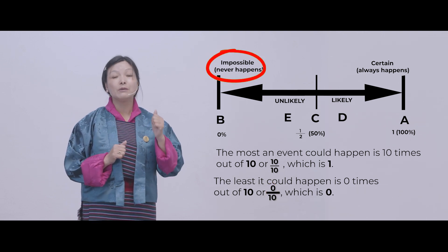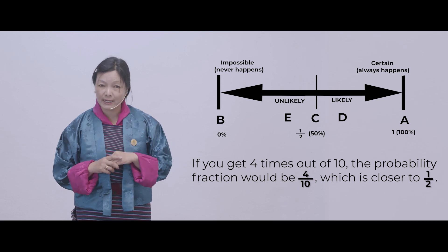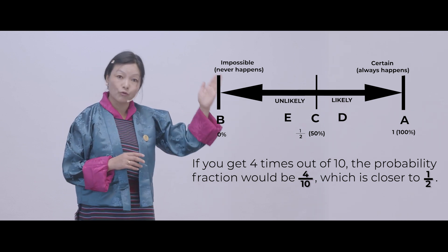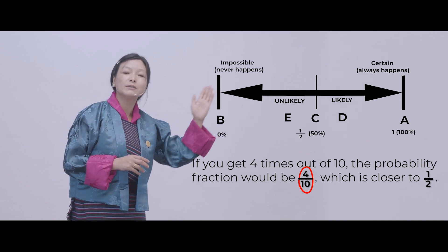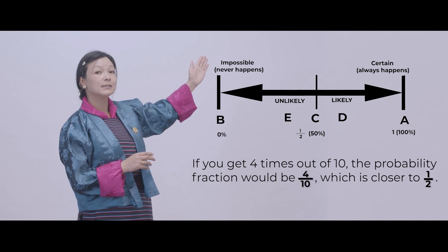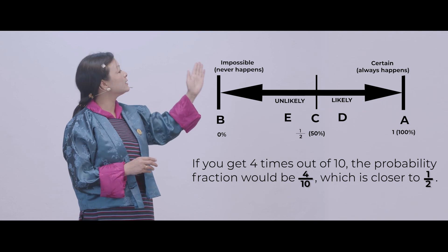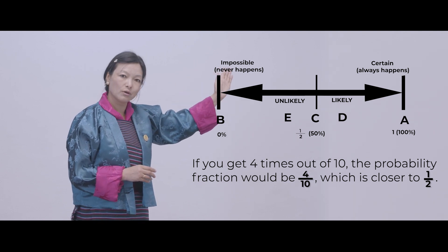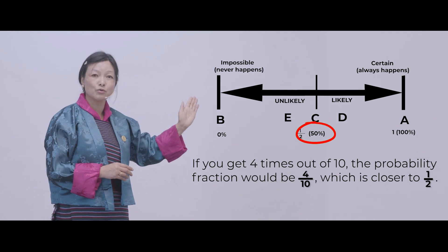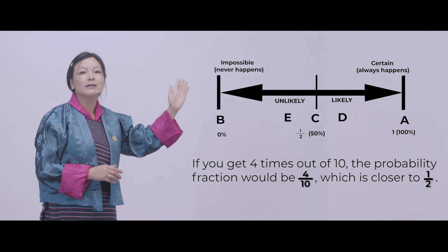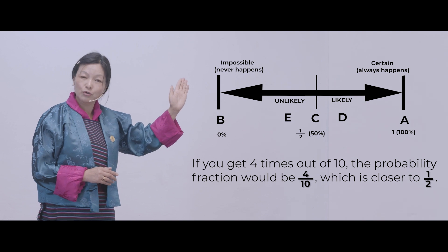For example, if you get 4 times out of 10, you write it as 4 over 10. If you put it on a probability scale, it is closer to half — that is 1 over 2. So you will write that 4 over 10 is closer to half.